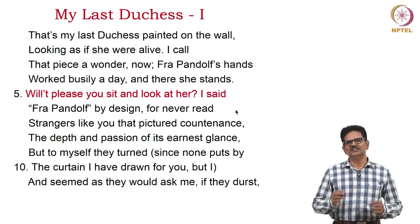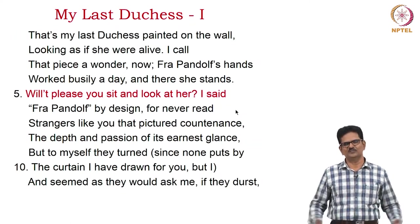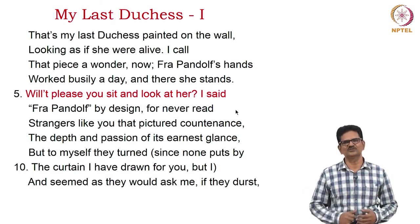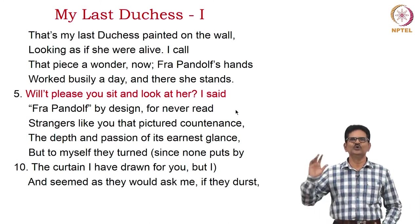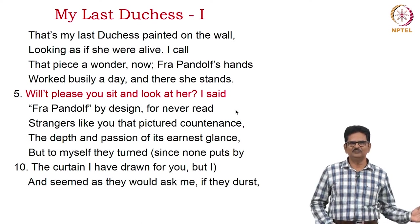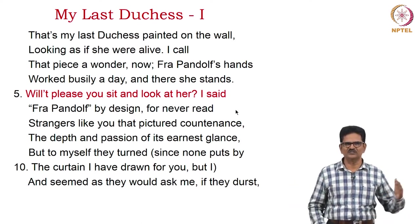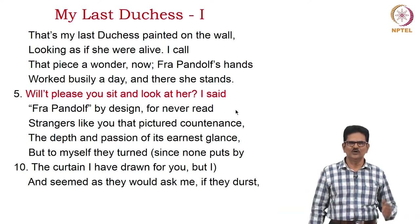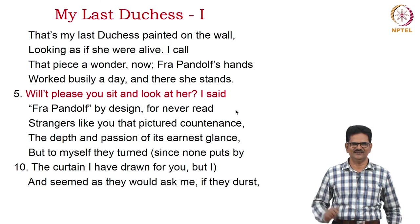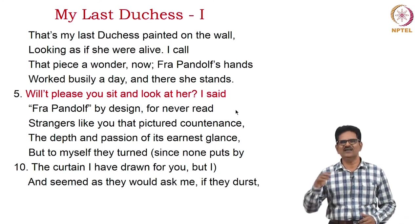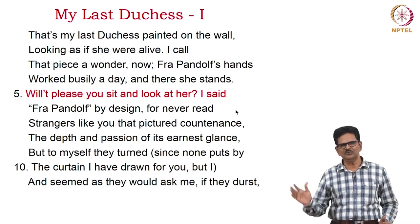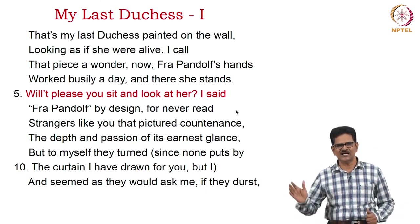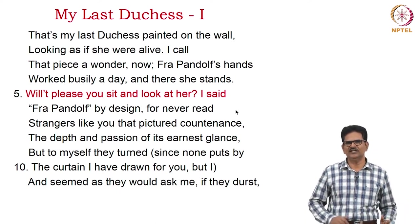We have just two extracts from My Last Duchess. It's a long poem, but we'll have just two extracts. First extract: 'That's my last duchess painted on the wall, looking as if she were alive. I call that piece a wonder now. Fra Pandolf's hands worked busily a day, and there she stands. Will it please you sit and look at her? I said Fra Pandolf by design, for never read strangers like you that pictured countenance, the depth and passion of its earnest glance. But to myself they turn, since none puts by the curtain I have drawn for you, but I, and seemed as they would ask me if they durst.'